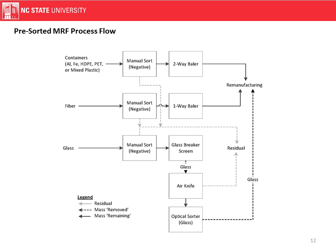This is the pre-sorted MRF. It looks very different — there's very little separation equipment, and it primarily wants to pull out any contaminants. However, in the case of glass, it does utilize a glass breaker screen, then sorts via an air knife and sorts by color. There is a manual sort here, but note this is not broken glass — that manual sort happens when it's just glass bottles.